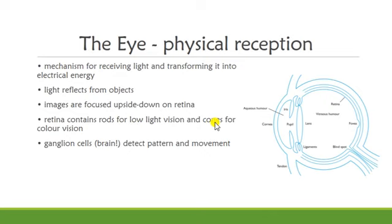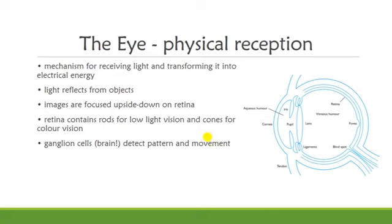The cones are the second type of receptor in the eye. They are less sensitive to light than rods and can therefore tolerate more light. There are three different types of cones, each sensitive to different wavelengths of light, and this allows for color vision — enabling us to detect colors.